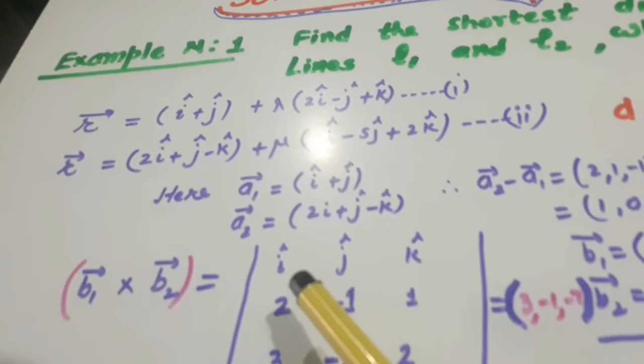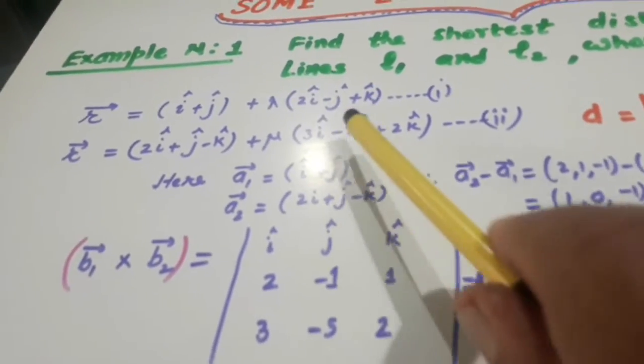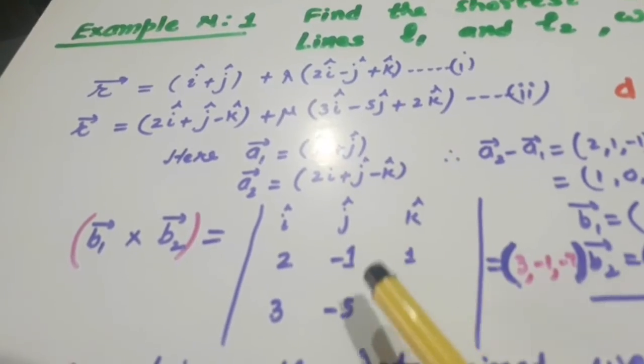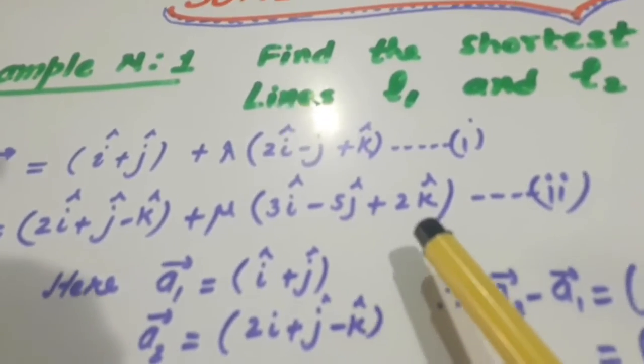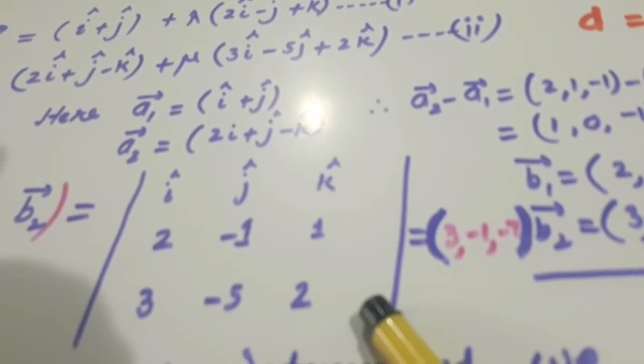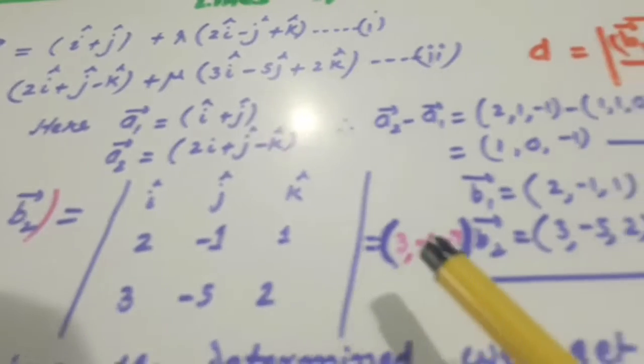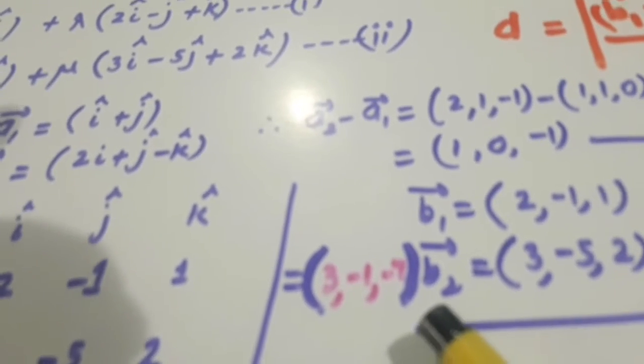IJK, B1 is 2, minus 1, 1 and B2 is 3, minus 5, 2. So on solving this, what we get, it is 3, minus 1, minus 7.